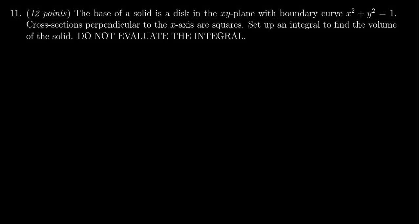In this video, we provide the solution to question number 11 for practice exam number one for Math 1220, in which case we're gonna have to calculate the volume of a solid. The base of a solid is a disk in the xy plane with a boundary curve of x squared plus y squared equals one. Cross sections perpendicular to the x-axis are given as squares. You need to set up the integral to find the volume of the solid, but we do not have to evaluate the integral.